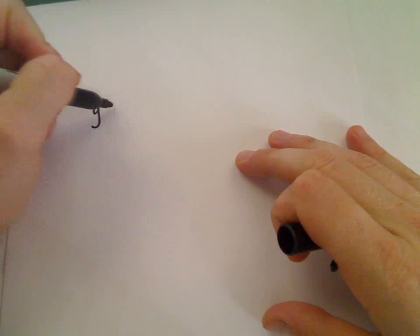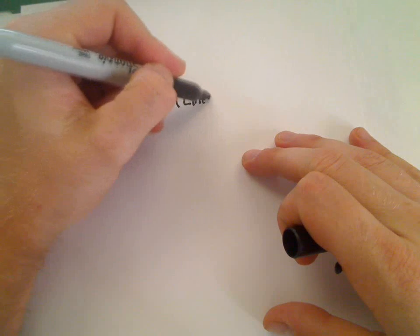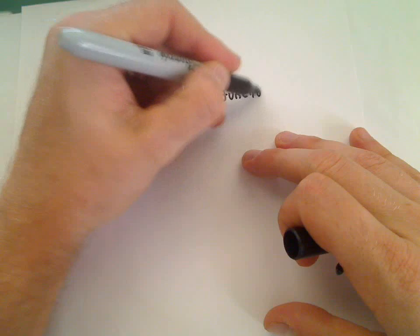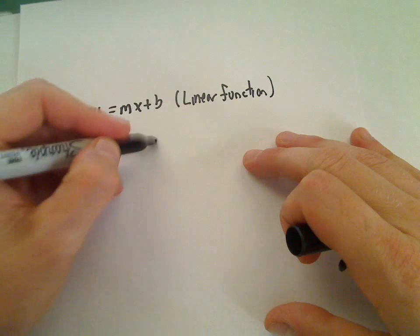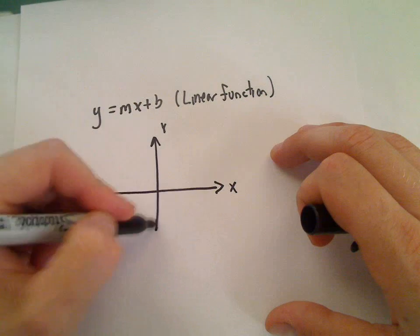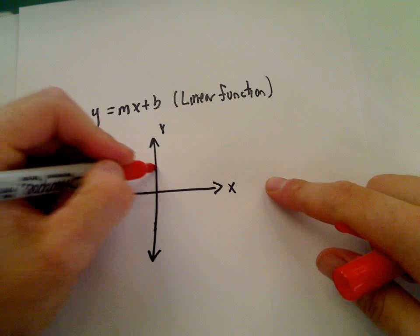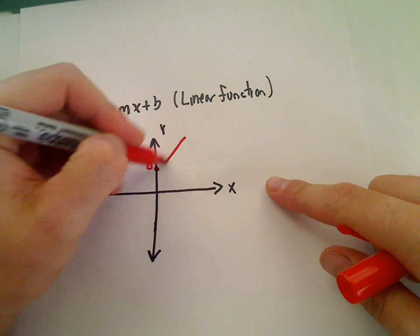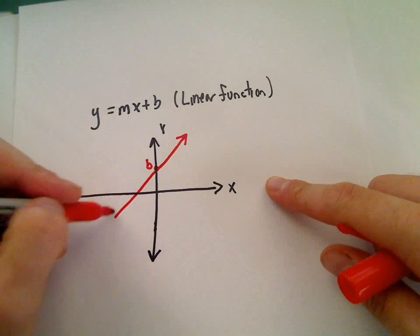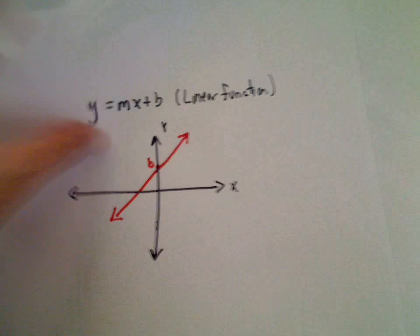The first one you should recognize is anything of the form y equals mx plus b. This is just going to be a linear function. Any linear function, if you graph it, is going to look just like a straight line. m represents the slope, b represents the y-intercept. So if you have an equation with the form y equals mx plus b, that's just going to be the graph of a straight line. There's number one down.